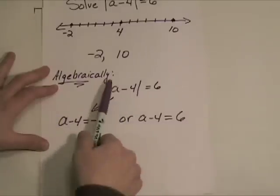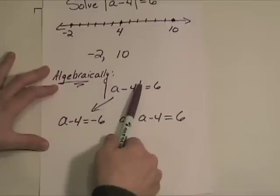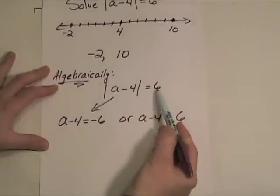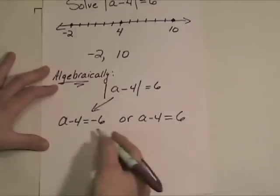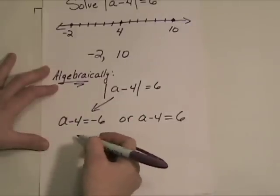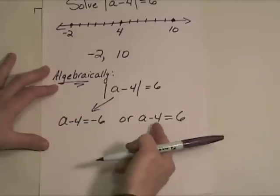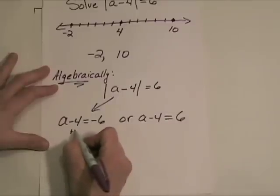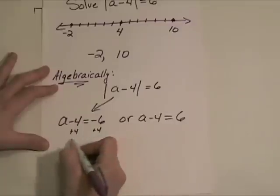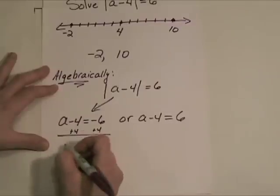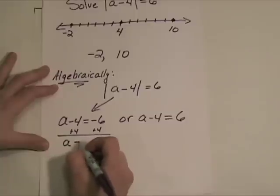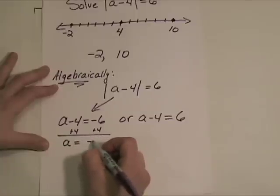Either way, when we take the absolute value, we will get a positive six. So algebraically, all we have to do to solve for A here is to just get rid of the negative fours. So we're going to add a positive four on both sides here. And that will leave me with A is equal to negative two.